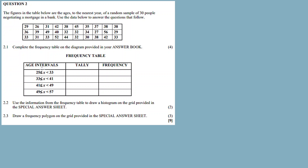So the data set here is for question 2.1 — you need to complete a frequency table. I'll ask you to fill out the data and the frequency. The age groups are: between 25 and 33, then between 33 and 41, then between 41 and 49, and between 49 and 57. You have to count all of these.